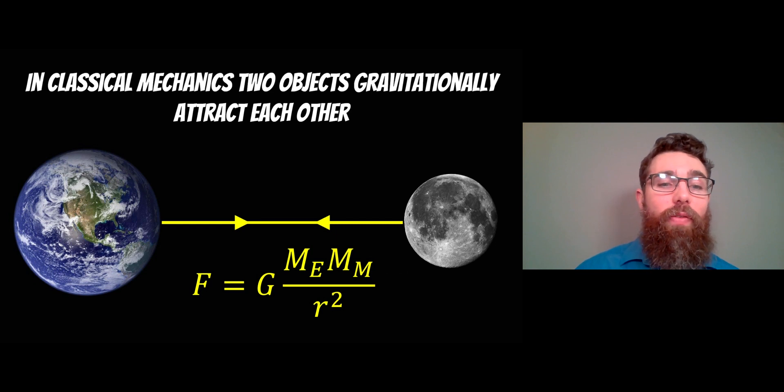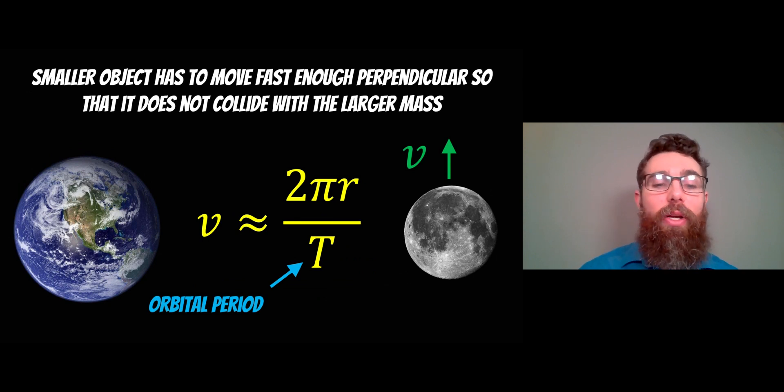So in this case, Earth is the larger mass and the Moon is the smaller mass. Now, in order for the Moon to be on an orbit around the Earth, it has to be traveling with some velocity perpendicular to the gravitational force.